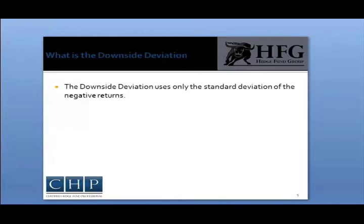The Sortino Ratio focuses on volatility of the returns when the portfolio loses money, and can provide a measure of an investment manager's performance relative to a minimal acceptable return. Where the Sharpe Ratio uses the standard deviation of returns to measure the volatility of a portfolio relative to the average return, the Sortino Ratio eliminates upside volatility from this metric.